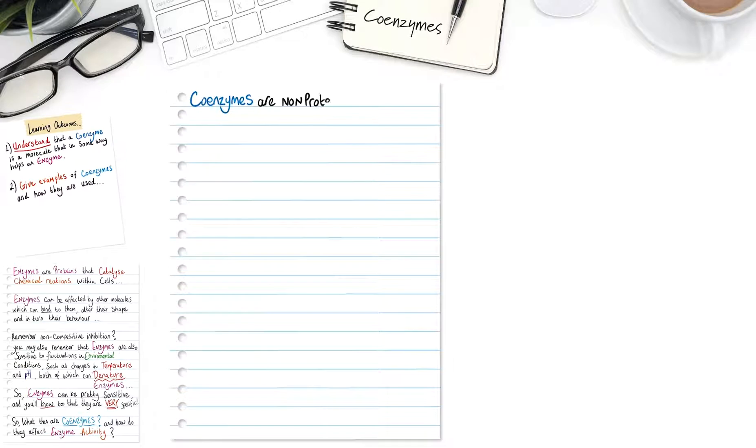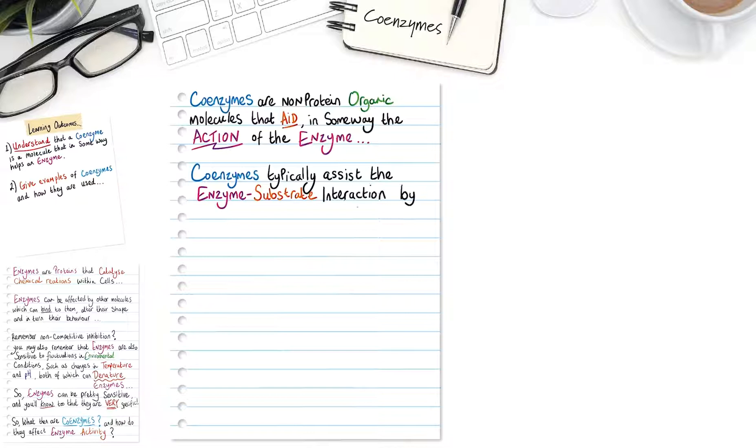Coenzymes are non-protein organic molecules that aid in some way the action of the enzyme. Coenzymes typically assist the enzyme substrate interaction by means of donating or accepting particular chemical groups.